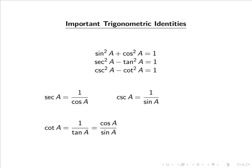Firstly, let's consider some important trigonometric identities. One that everyone should be familiar with is that sin²a + cos²a = 1. We also have that sec²a − tan²a = 1 and cosec²a − cot²a = 1.